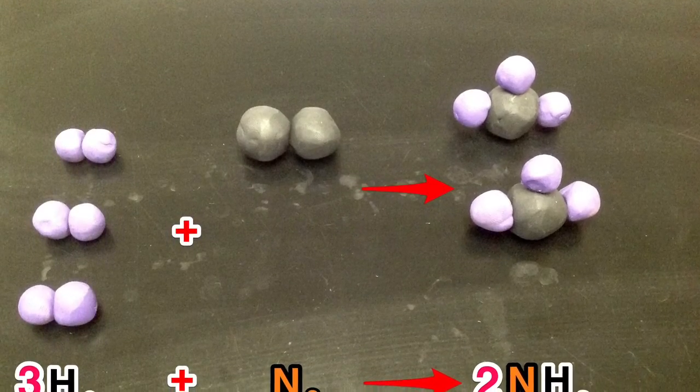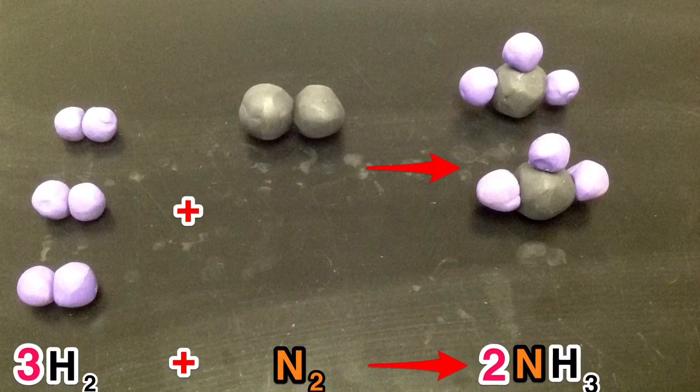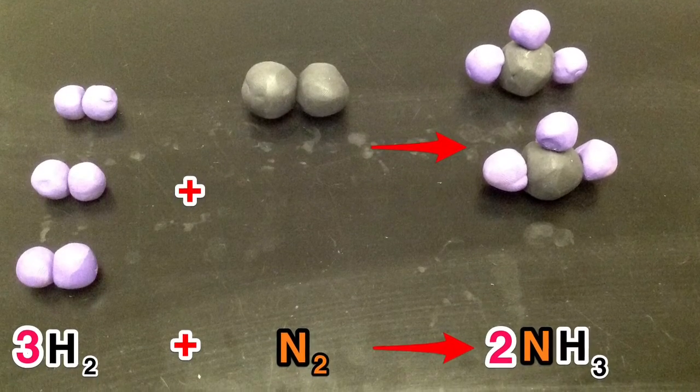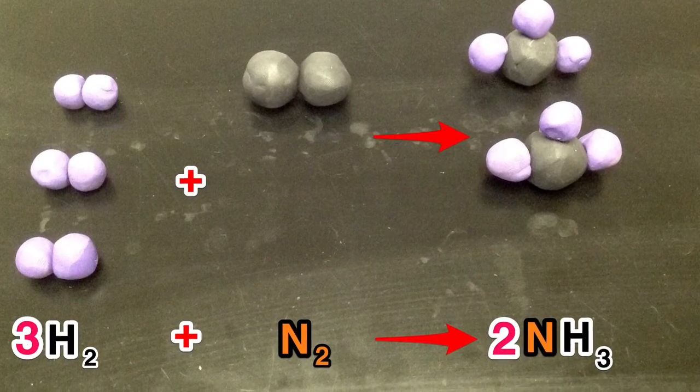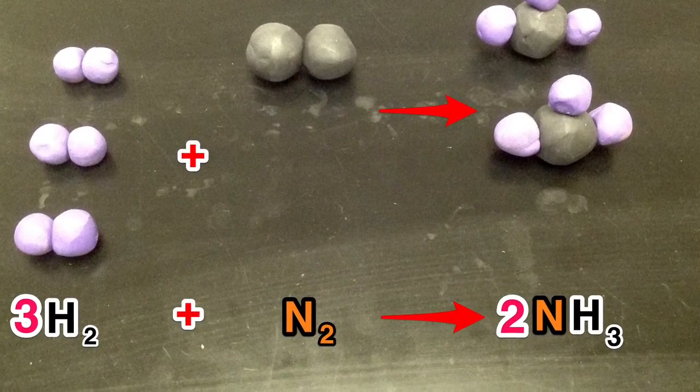Since we have six hydrogens now on the right, and only two on the left, we can add three molecules of hydrogen. In doing this, we get six atoms of hydrogen. We place a coefficient of three in front of the H2, giving us three molecules of hydrogen.